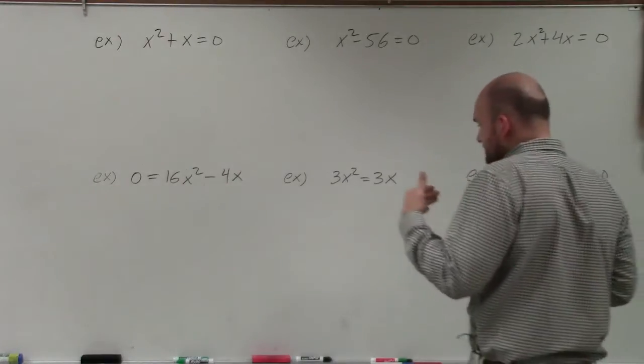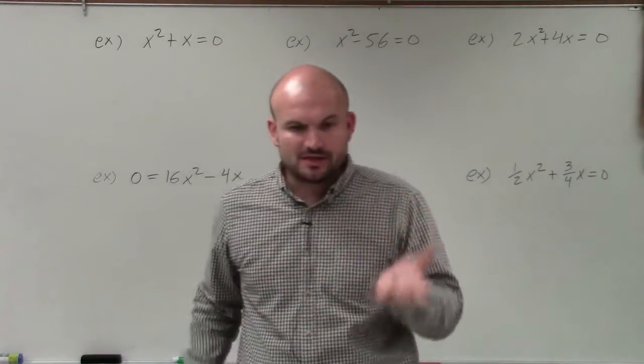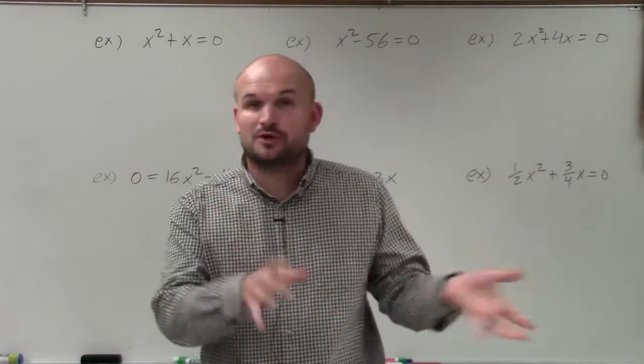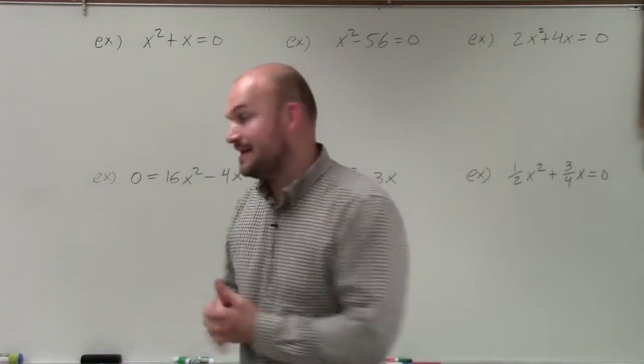So basically in this one, when we factor out the GCF, we're looking for what is a common factor between our two terms. Then we're going to divide that out, apply the zero product property, and then solve.